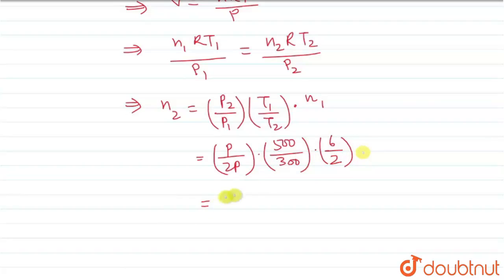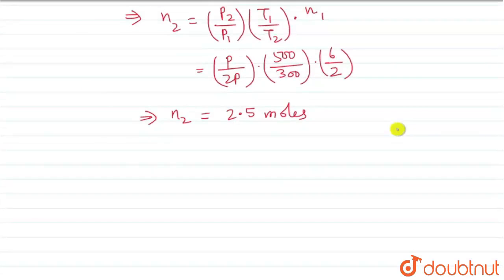This gives us n2 = 3 × (1/2) × (500/300) = 3 × 1/2 × 5/3 = 2.5 moles. So delta n, or the number of moles ejected, will be: